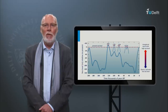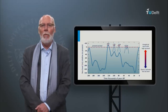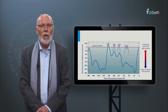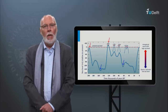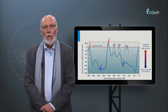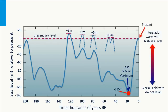As this graph shows, over the last 200,000 years the Earth has experienced a number of glacial (cold) and interglacial (warm) periods. About 20,000 years ago the Earth experienced the last glacial maximum, a cold period. Presently we are in the warm period of the Holocene interglacial.